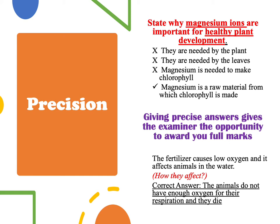Example number 2: 'The fertilizer causes low oxygen and it affects animals in the water.' Ask yourself how and why it affects the animals. The ideal answer is that the animals do not have enough oxygen. Why? Because animals need oxygen for respiration. And if they do not have enough oxygen, eventually they will die.